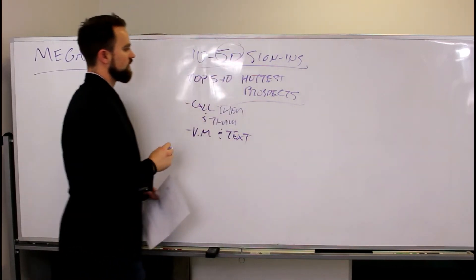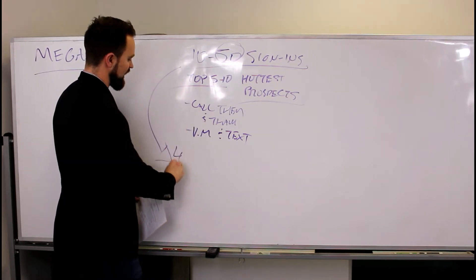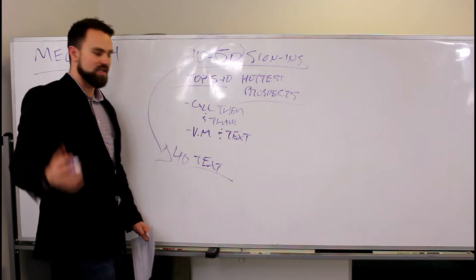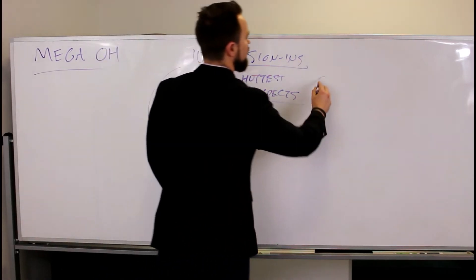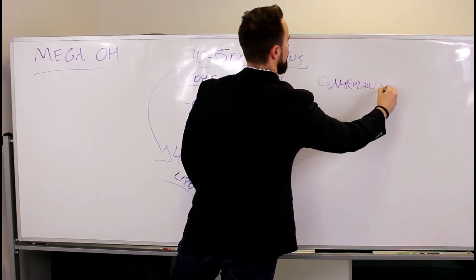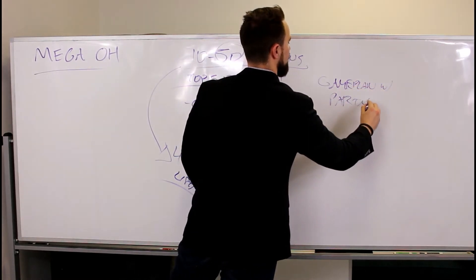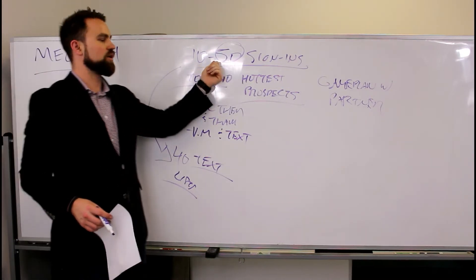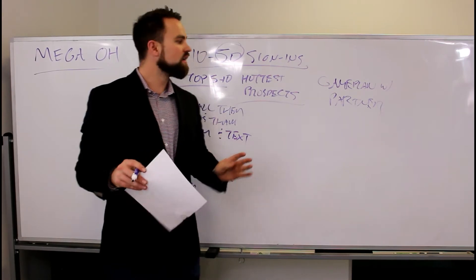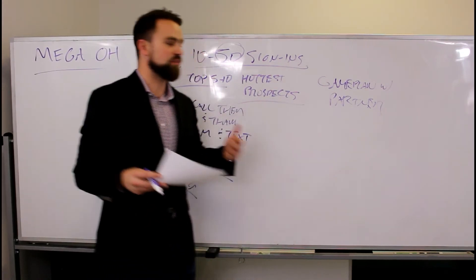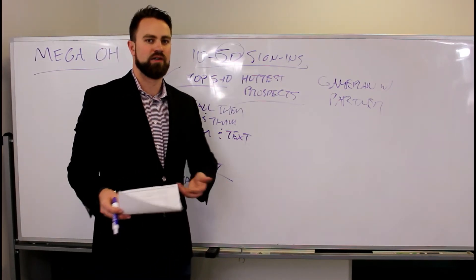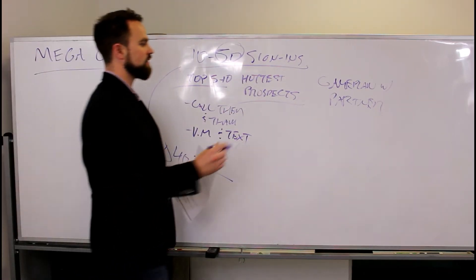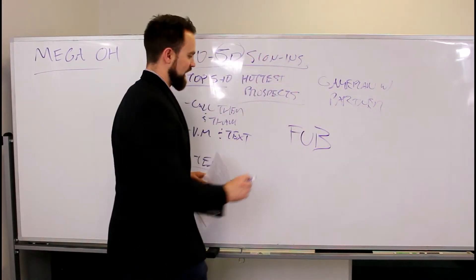If they don't answer, leave a voicemail and text. If you have 50 people and you've gone through the top five to ten, you might not have time to call all 40 remaining — at minimum send a text. Consolidate all your lists and game plan with your partner on who follows up with who. Usually one partner takes 25 and the other takes 25. If you both talked to the same prospect, whoever had the best rapport follows up. Make sure everyone is accounted for, then move all leads into Follow Up Boss and start the follow-up campaigns.